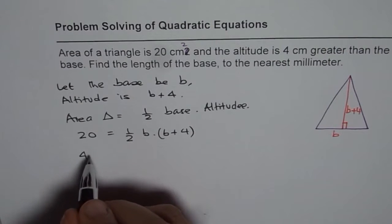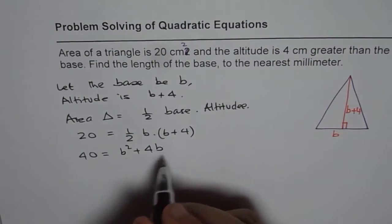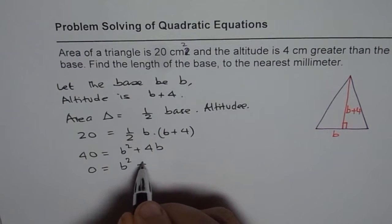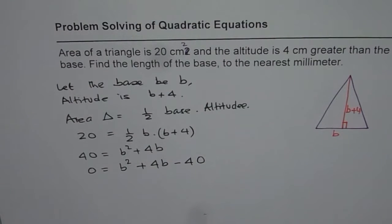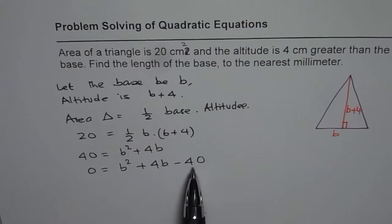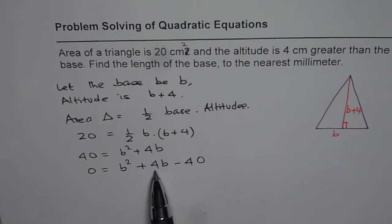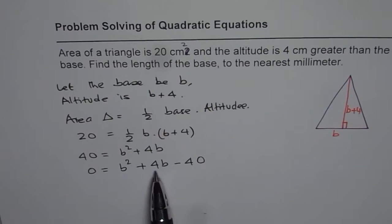Let us multiply both sides. We get 40 equals B squared plus 4B. We can try to factor this or use the quadratic formula. We are looking for two numbers whose product is negative 40 and whose sum is 4. The numbers like 4 and 10, 8 and 5, or 2 and 20 do not work.